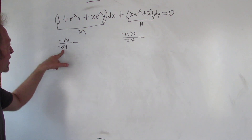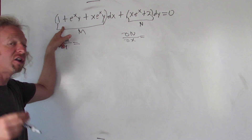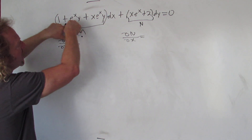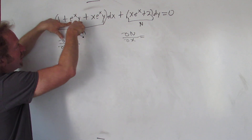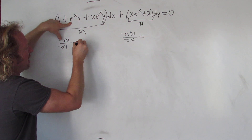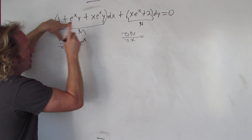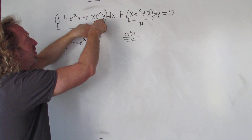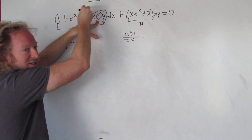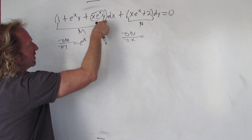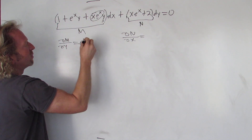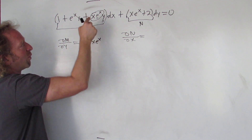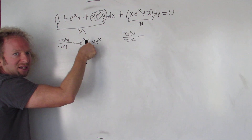We're taking the partial of M with respect to y, so we're treating all of the x's as constants. The derivative of 1 is 0. e to the x is a constant, so the derivative of y is 1 and we just get e to the x. Taking the derivative with respect to y, x is a constant, so we just get x·eˣ because the derivative of y is 1 and this piece hangs out.